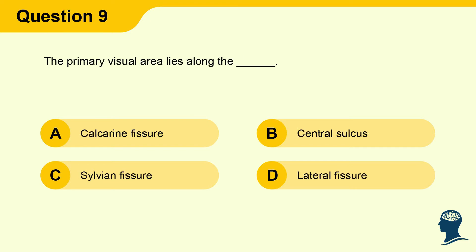Question 9: The primary visual area lies along the: A) Calcarine fissure, B) Central sulcus, C) Sylvian fissure, D) Lateral fissure.